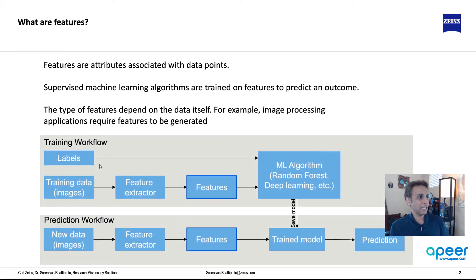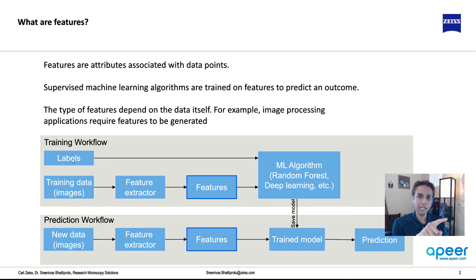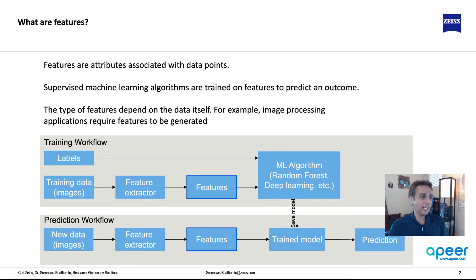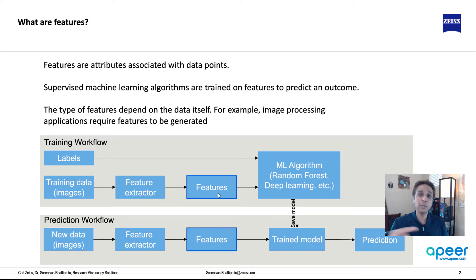Let's focus on the training workflow for machine learning. Typically you have labels — think of an image where you say this is a nuclei, this is a mitochondria, this is a lipid droplet. You have training data: a whole bunch of images with labels pointing to the right regions. Then you extract features by applying filters such as edge detection. You end up with a table of features — pixel values being one such feature. If a pixel is bright or dark, if it is blue indicating DAPI staining, that tells you it's a nucleus. Pixel value itself is a feature.